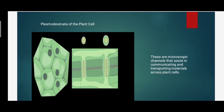The third cell organelle is plasmodesmata — microscopic channels that assist in communicating and transporting materials across plant cells. For transporting material from one cell to another, some pores are present on the cell wall, and in the pore region there is the presence of plasmodesmata. These channels allow communication and transport between cells.